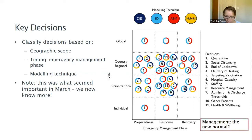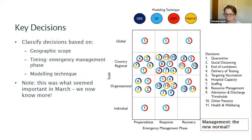Duncan produced an amazing graph showing how everything fits together and what modeling techniques would be useful. For example, social distancing could be modeled with discrete event simulation, system dynamics, agent-based models, or hybrid models — depending on the exact question. In many cases more than one modeling technique can be used, and in fact none of the eleven decisions have just one color on the chart.